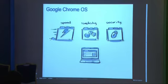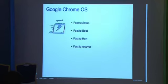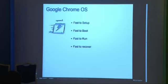The idea is we wanted Chrome OS to be optimized for the web. The three things we concentrate on are speed, simplicity, and security — just like what we did with Chrome itself. From a speed perspective, we tried to make Chrome OS fast to set up. How many people have set up PCs before? It takes ages. We wanted to make sure this is as easy and as quick as possible.